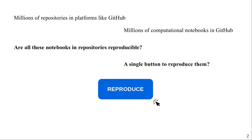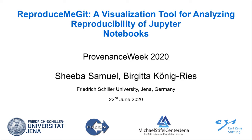Hello everyone. Is there a single reproduce button to reproduce all the published results? There are millions of repositories on platforms like GitHub, and in these repositories there are also millions of computational notebooks which contain code and results. Are all these notebooks which are shared publicly in repositories like GitHub reproducible? Is there a single button to reproduce them all? In this presentation, I would like to introduce ReproduceMeGit, which has a single reproduce button to reproduce and analyze the reproducibility of computational notebooks.